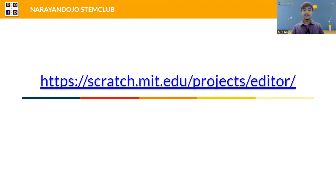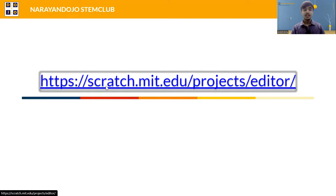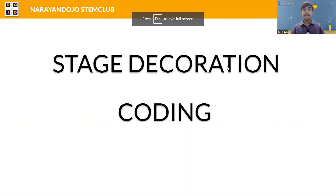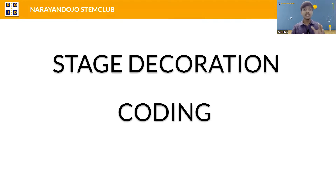First of all, click on the link which you can find inside the description of this session, and go to the Scratch editor. We will divide this project into two sections: the first one is stage decoration and the other one is coding. First we will decorate the stage by adding the backdrop and the sprite, and then we will write the code for animating those sprites.